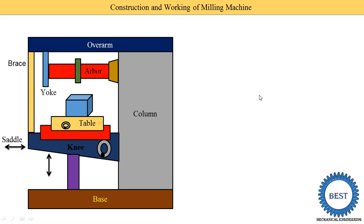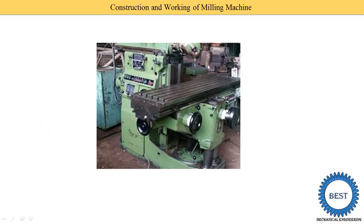This is the actual image of the milling machine. The knee part moves in the vertical up and down direction, adjusting the space between the workpiece and the tool. The saddle moves toward or away from the column. The table has various T-slots and moves in the longitudinal direction. These are the important components and the directions in which each moves.